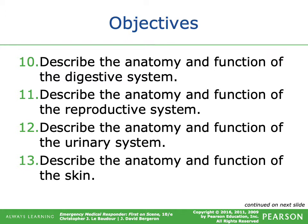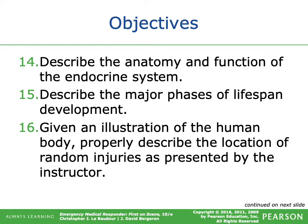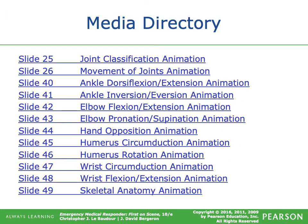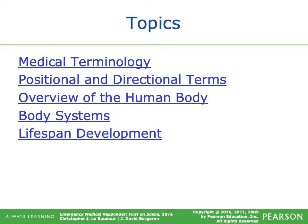Additional objectives include: describe the anatomy and function of the urinary system and skin; describe the anatomy and function of the endocrine system; describe the major phases of lifespan development; given an illustration of the human body, properly describe the location of random injuries; demonstrate awareness and respect for cultural differences and diversity within the human body; and value the importance of using standard anatomical terms when describing and documenting illness and injuries.